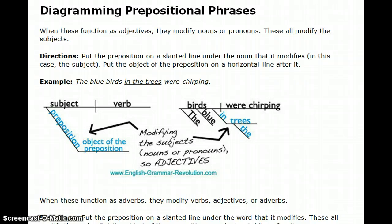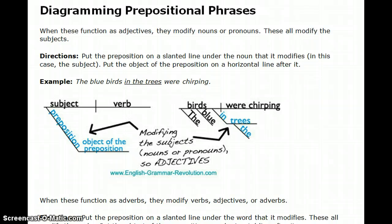Knowing the four questions for adjectives — what kind, which ones, how many, and whose — will help you realize that a prepositional phrase is acting like an adjective. If a prepositional phrase is answering one of the adverbial questions — how, when, where, or why — then it is acting like an adverb, and it goes under the verb.